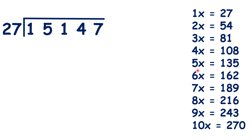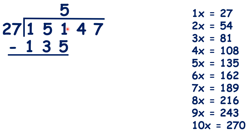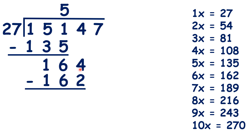We can see that 5 times 27 is 135, so let's write 135 under the 151 and 5 in our answer. 151 minus 135 is 16, and we can bring down the 4, so we have 164 divided by 27. We can see that 6 times 27 is 162, so let's write 162 below 164 and 6 in our answer.